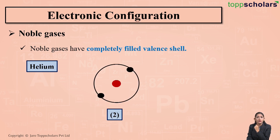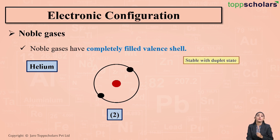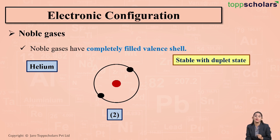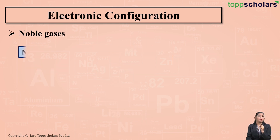The electronic configuration of helium is also 2. As you can see, helium has two electrons in its first orbit, that is its outermost orbit. Since helium has two electrons in its outermost shell, helium is said to be stable with the duplet state. Duplet state means that an atom has two electrons in its outermost shell.